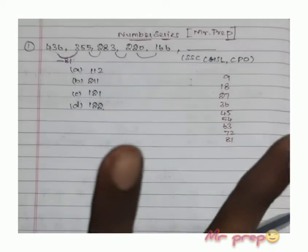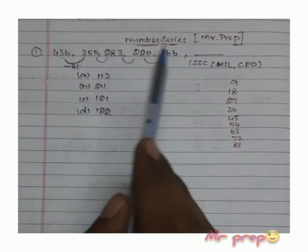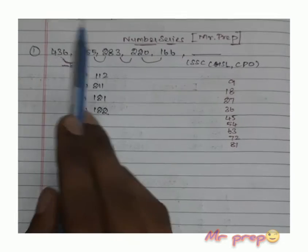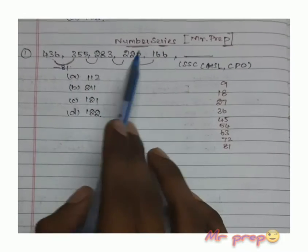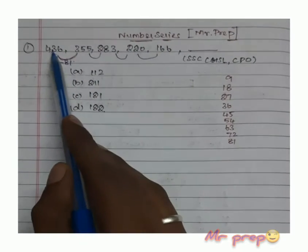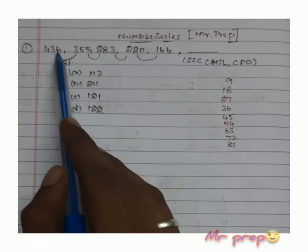There are two chances. If we divide or subtract, the numbers will decrease. If we multiply or add, the numbers will increase. So we will focus on the subtraction and division cases.